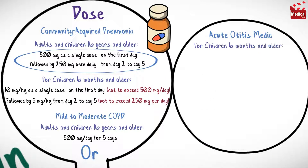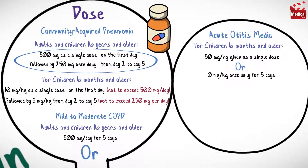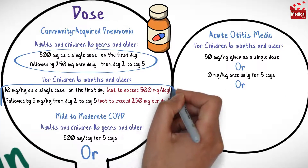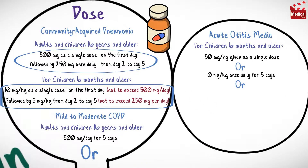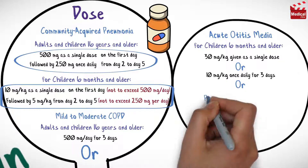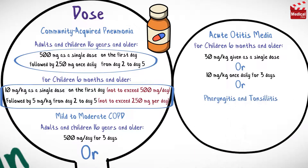The dose for acute otitis media for children 6 months and older is 30 milligrams per kilogram given as a single dose, or 10 milligrams per kilogram once daily for three days, or 10 milligrams per kilogram as a single dose on the first day followed by 5 milligrams per kilogram from day 2 to day 5.